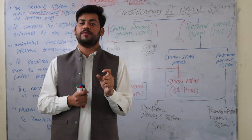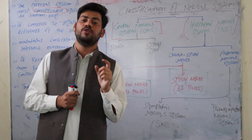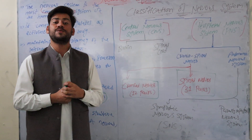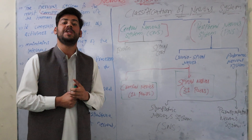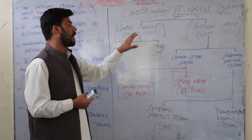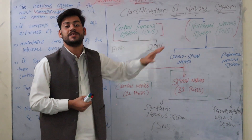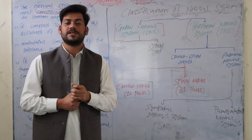The autonomic nervous system consists of the sympathetic nervous system and the parasympathetic nervous system. After this, we will discuss what neurons are and the structure of neurons and how neurons work. In the next video, we will discuss the cranial nerves system.